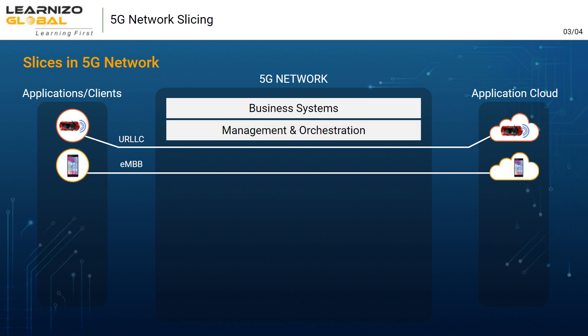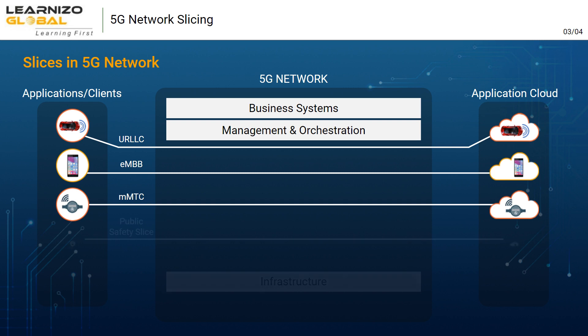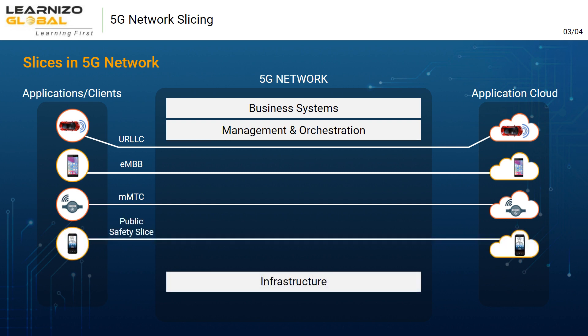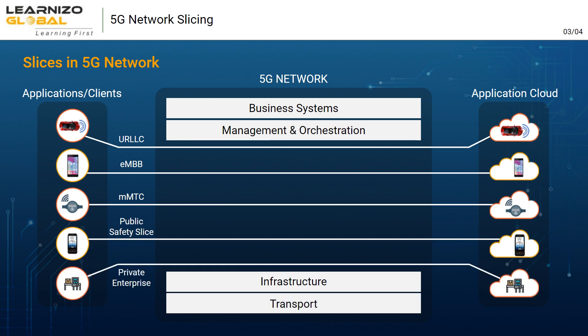These network slices can be standard slices available for retail users or custom slices provided as NaaS — network as a service — for enterprise customers. They can be created, maintained, and terminated based on services or customer SLA requirements, and can be provisioned by enterprise customers in a self-service fashion.